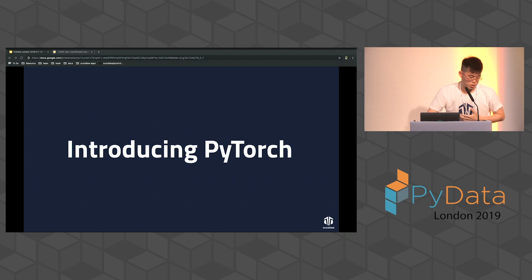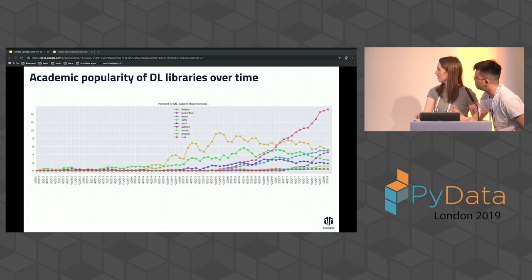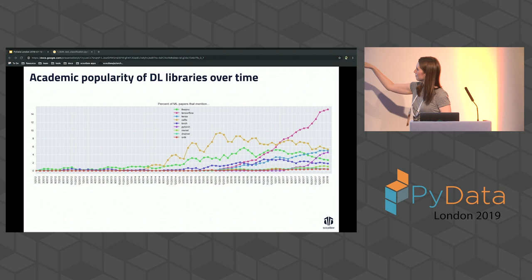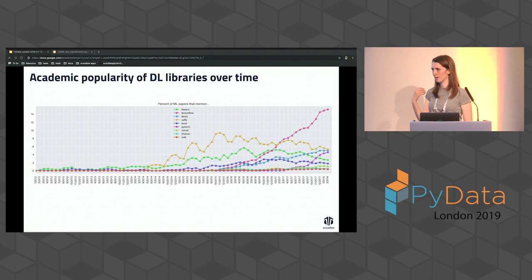Susanna is going to start with the PyTorch intro. Let's talk about how PyTorch works and where it fits in the overall deep learning library ecosystem. This is a cool graph Karpathy put on his Twitter — the dark purple line is PyTorch and the pink one at the top is TensorFlow. TensorFlow is still very dominant in academic research for deep learning, but PyTorch is on the rise, and this graph only goes up to 2018.